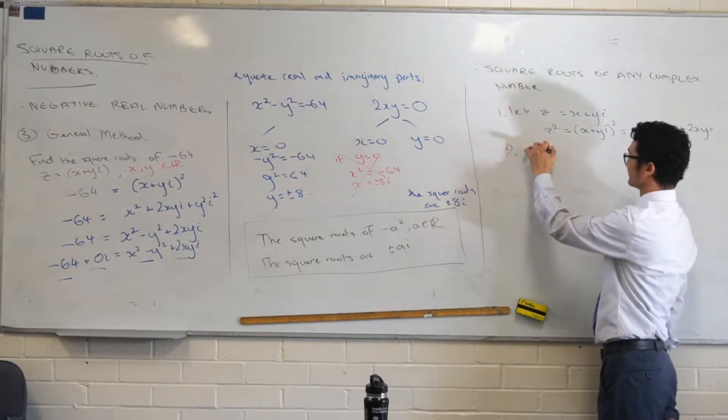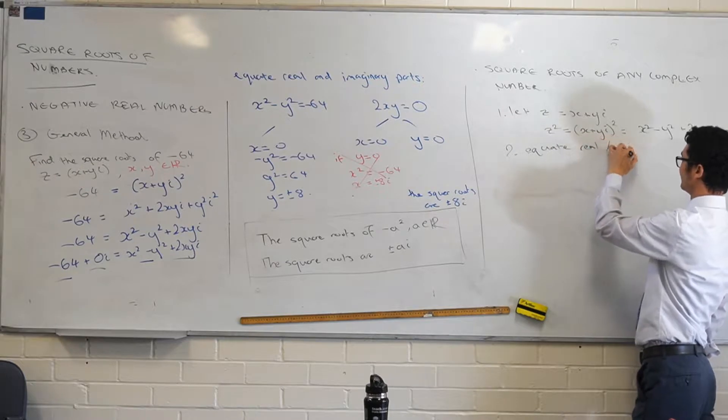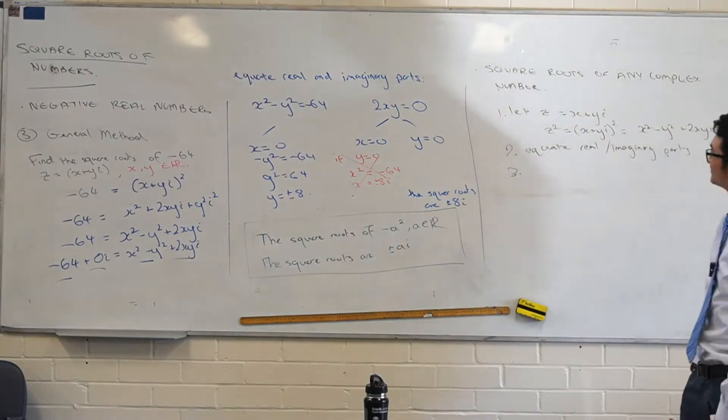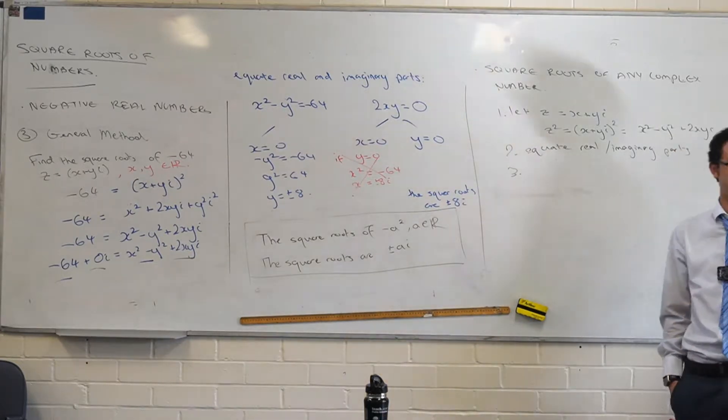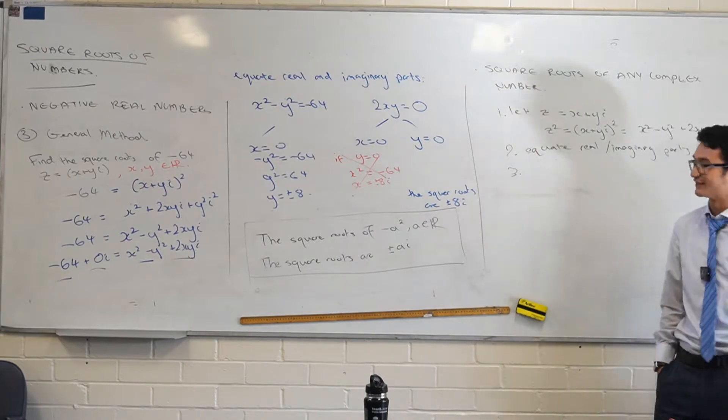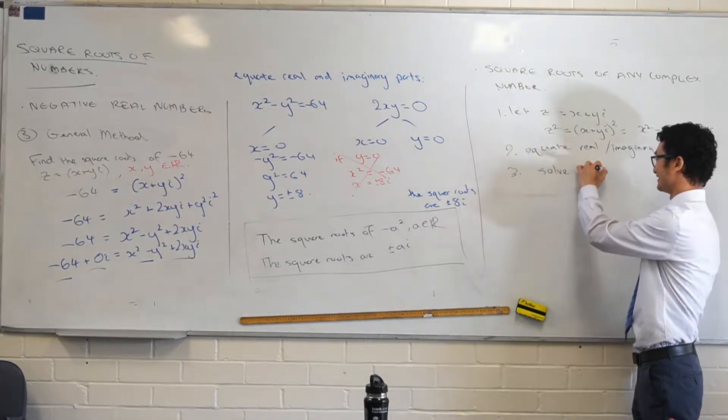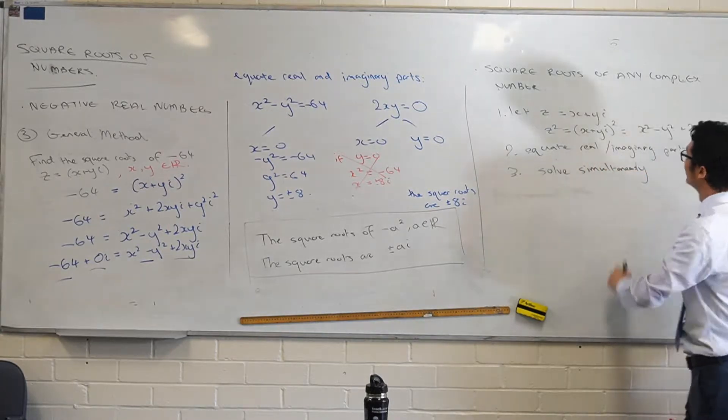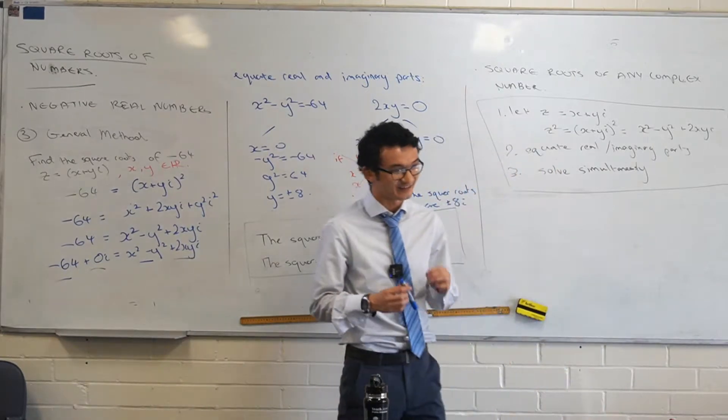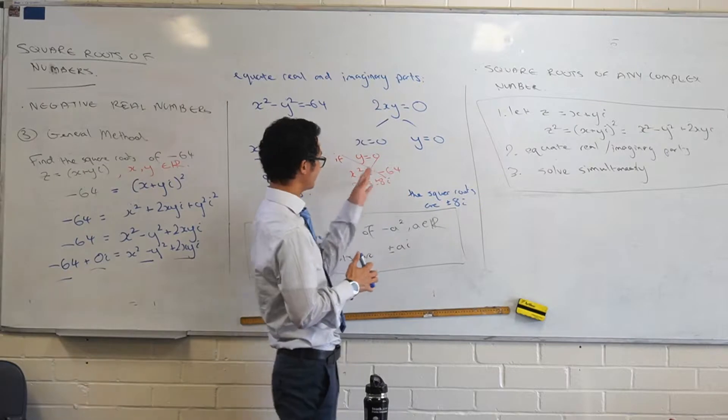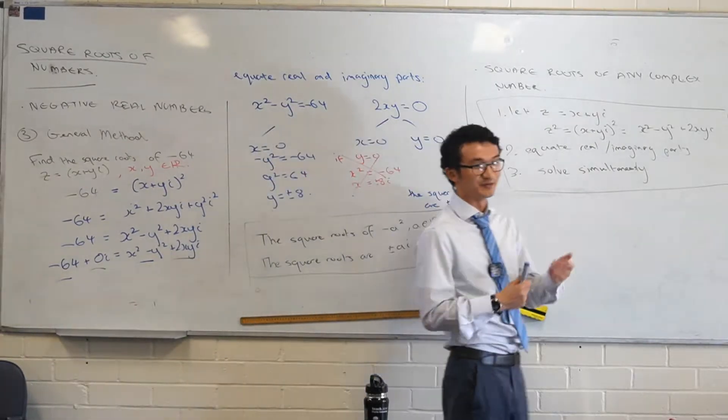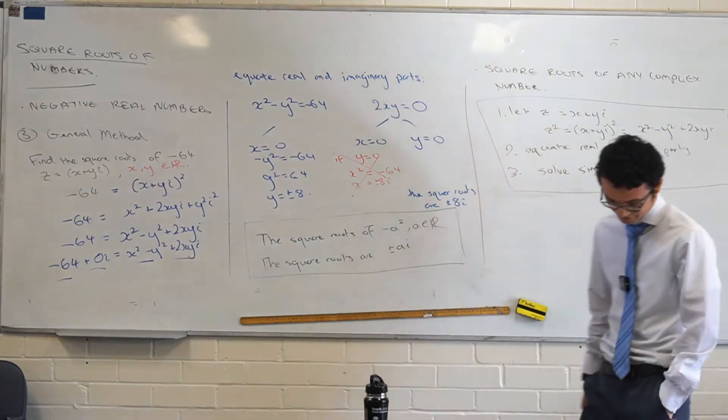And then what was the last step? What do we do to finish it off? To actually find the answers to the square root. Solve it in a particular way - we had to solve simultaneously. So those are your three steps.